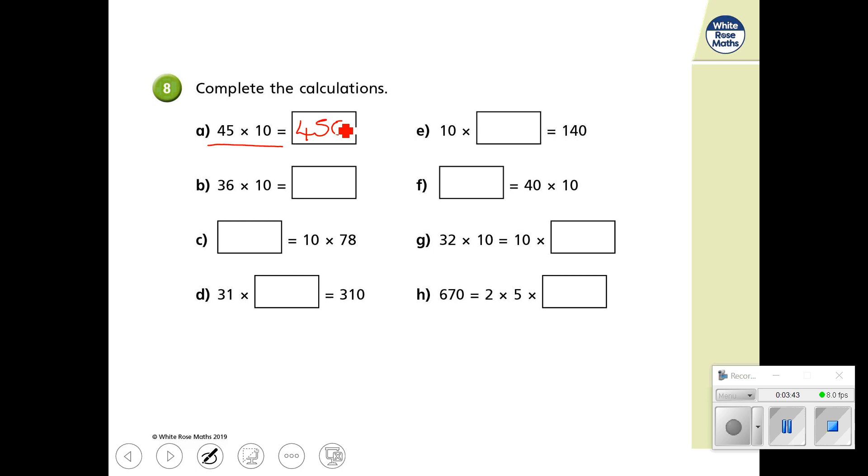This question here, 36 times 10, 360. This one, which is back to front, the equal sign is in the wrong place, or a different place. So 10 times 78 is 780. I think you can have a go at most of those. Oh, let's have a look at this one. So 670 equals 2 times 5 times something.